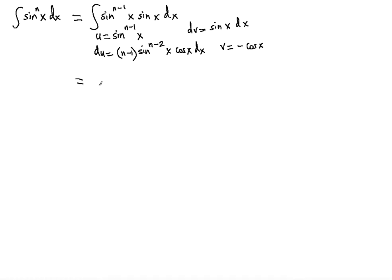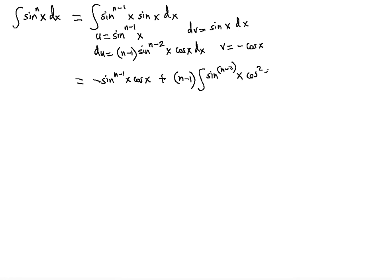Now applying the IBP formula uv minus ∫v du, we get negative sine x to the n minus 1 power times cosine x, minus — and that minus with the minus from v gives a plus — so plus n minus 1 times the integral of sine to the n minus 2 of x times cosine squared x dx, because cosine appears twice.